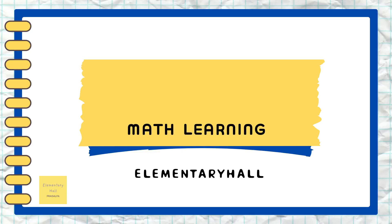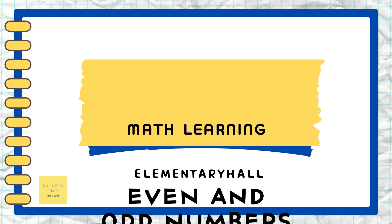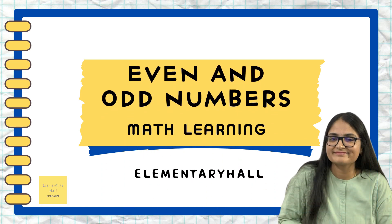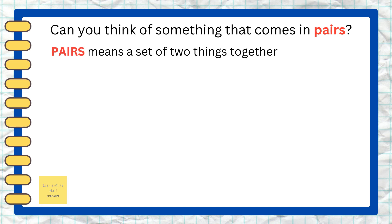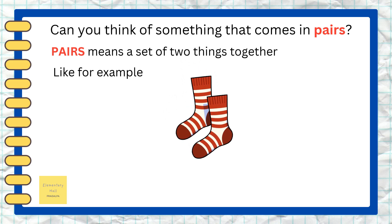Hello kids! In today's lesson we are going to learn about even and odd numbers. So let's get started. Can you think of something that comes in pairs? Pairs means a set of two things together. Like, for example, a pair of socks — we need two socks to put on our feet, right? Yes, we need two socks, so we need a pair of socks.